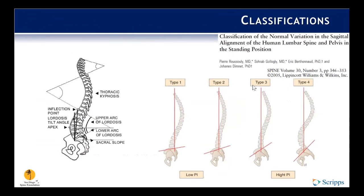Around the same time, Roussouly published his classification of adult spinal alignment. In his words, normal coronal alignment is well-defined — straight — however, the natural curve of the spine in the sagittal plane makes it hard to define what is normal, and significant variance within an asymptomatic population makes defining normal more difficult. He took 160 volunteers with no history of scoliosis or chronic back pain and obtained full-length standing AP and lateral radiographs, then attempted to classify the sagittal curve into four types using sacral slope: less than 35 degrees for types 1 and 2, 35–45 for type 3, and greater than 45 for type 4. To differentiate between types 1 and 2, he used the lordosis tilt angle — if it fell within L5 it was type 1, L4 was type 2. They noted that asymptomatic patients were usually type 3, while patients with asymptomatic disc herniations were most often types 1 and 2, and those with claudication were type 4.